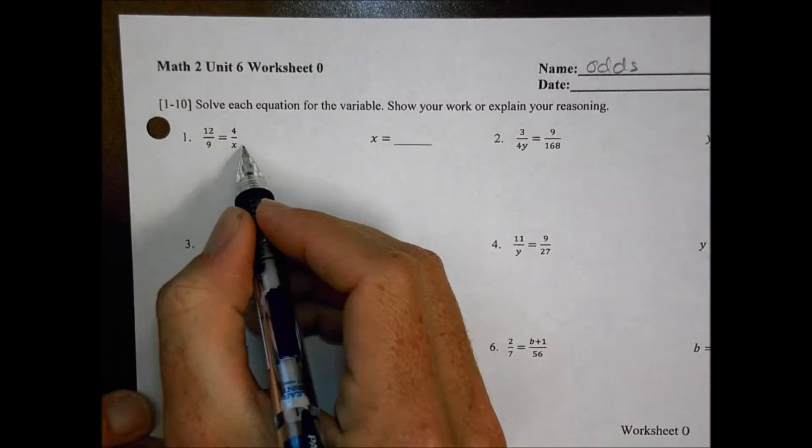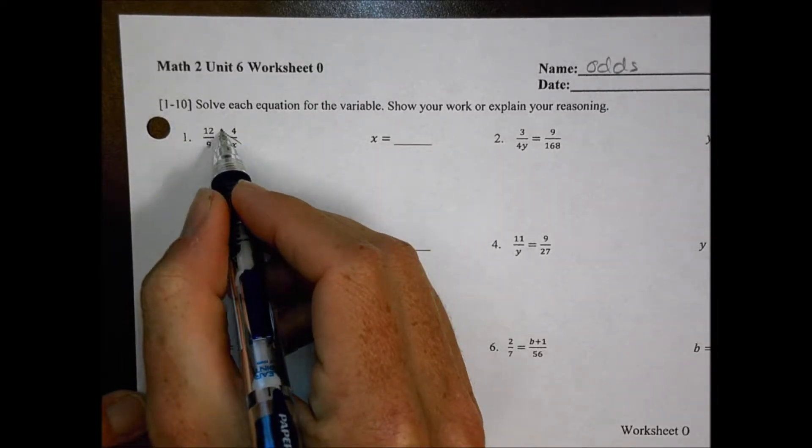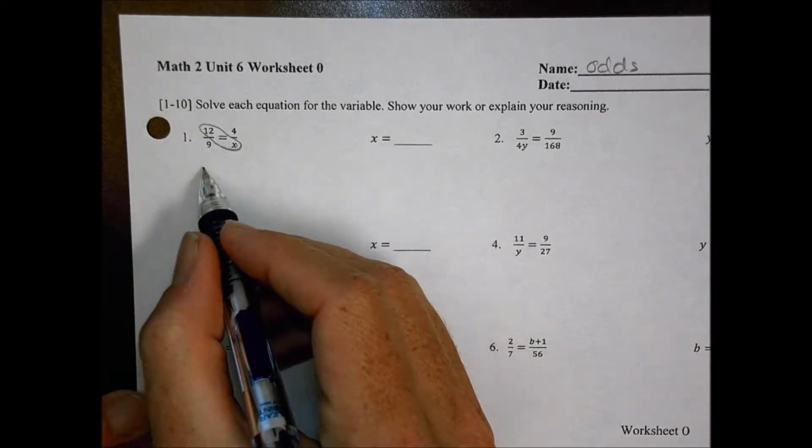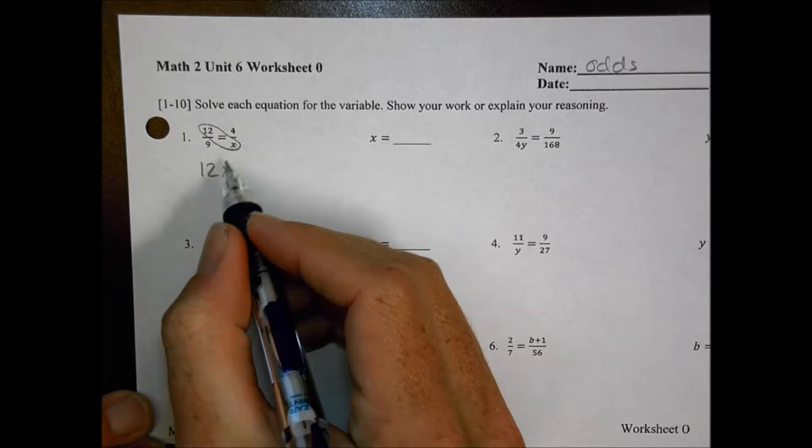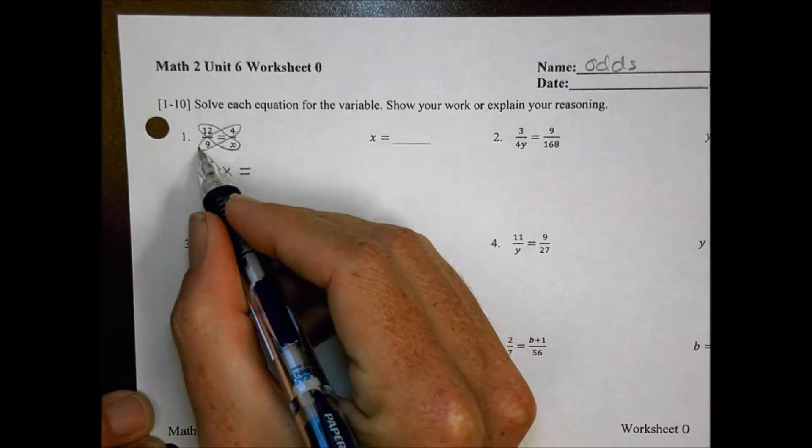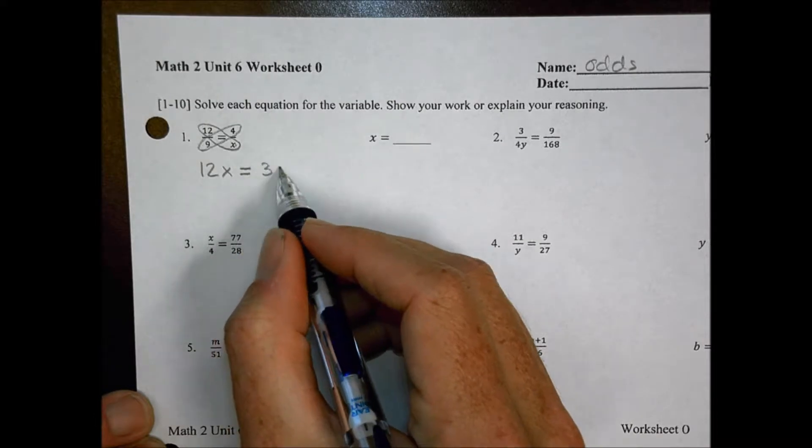We have 12 over 9 equals 4 over x. To solve this, what we want to do is first begin by cross-multiplying, so this becomes 12 times x, or simply 12x, and we'll set that equal to, cross-multiplying this way, 9 times 4, and 9 times 4 is 36.